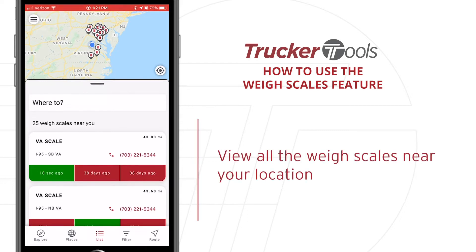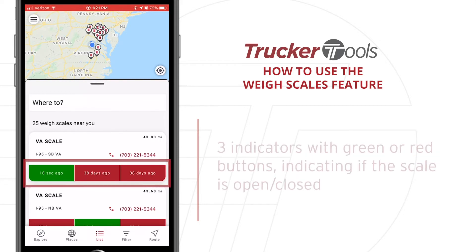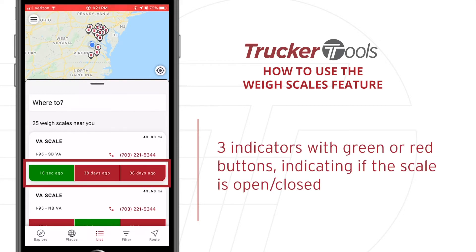This will show you all the Wayscales near your current location. You will see three indicators for each Wayscale with either red or green buttons indicating the latest updates on whether that Wayscale is open or closed.